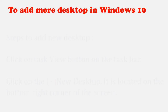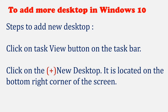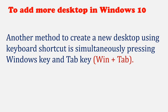Steps to add more desktops in Windows 10. Click on the Task View button on the taskbar. Click on the plus New Desktop, which is located on the bottom right corner of the screen. Another method is to create a new desktop using the keyboard shortcut by simultaneously pressing the Windows key and Tab key.